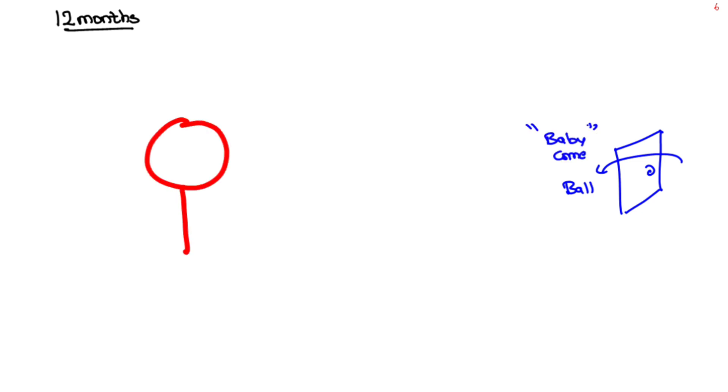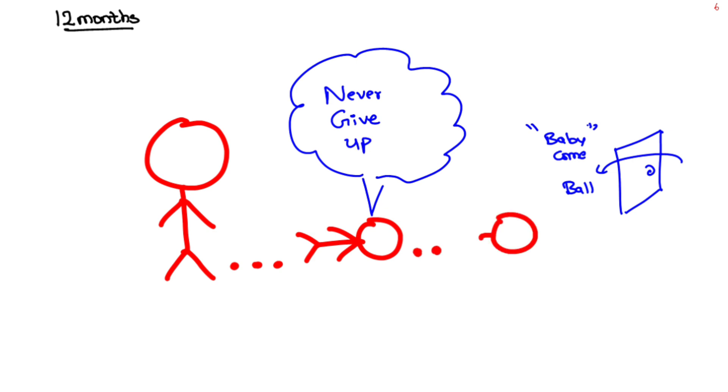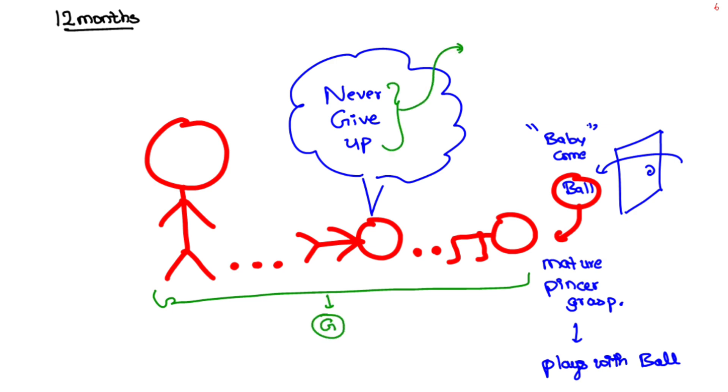Now the baby stands without support, walks but falls, says never give up and creeps to get the ball with mature pincer grasp and plays with it. This is the story. Here, standing without support, walking but falls, creeps well is gross motor. Talking meaningful one to two words is language. Comes when called and play simple ball games comes under social.